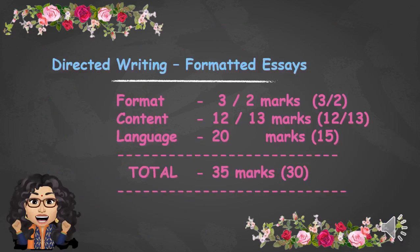Let's look at the Directed Writing formatted essays marks. The total marks will be 35. For the format, you can either get three or two marks. If it is two marks, it usually happens when the question tests on article writing, and content is usually 12 or 13. So if it is an article, the format will be 2 and the content will be given 30. Other formats remain with 3 and the content will be 12. Language marks is 20 and it's standard. So if you're targeting for an A, probably format you get full marks — 3 or 2 — and content 12 or 30. So 15 marks is confirmed, and for language you can roughly get 15, giving you 30 over 35. So getting an A is a clear chance.